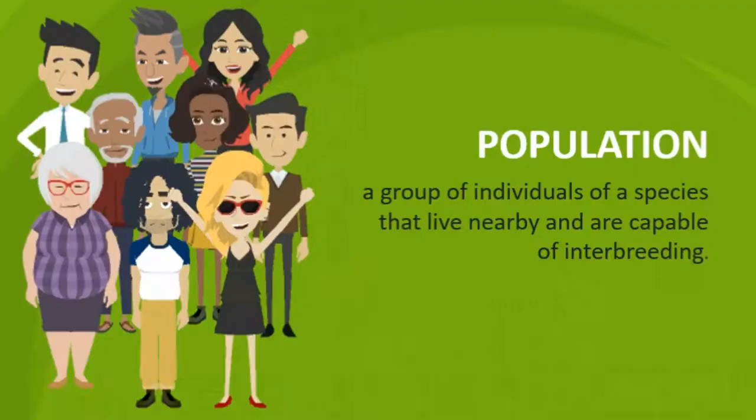Hi, so you and I are two people within a large population. A population is a group of individuals of a species that live nearby and are capable of interbreeding. If you look at the world around us, you'll notice that many people have different traits and features. This can be described by population genetics — basically how populations can change genetically and therefore evolve over time.